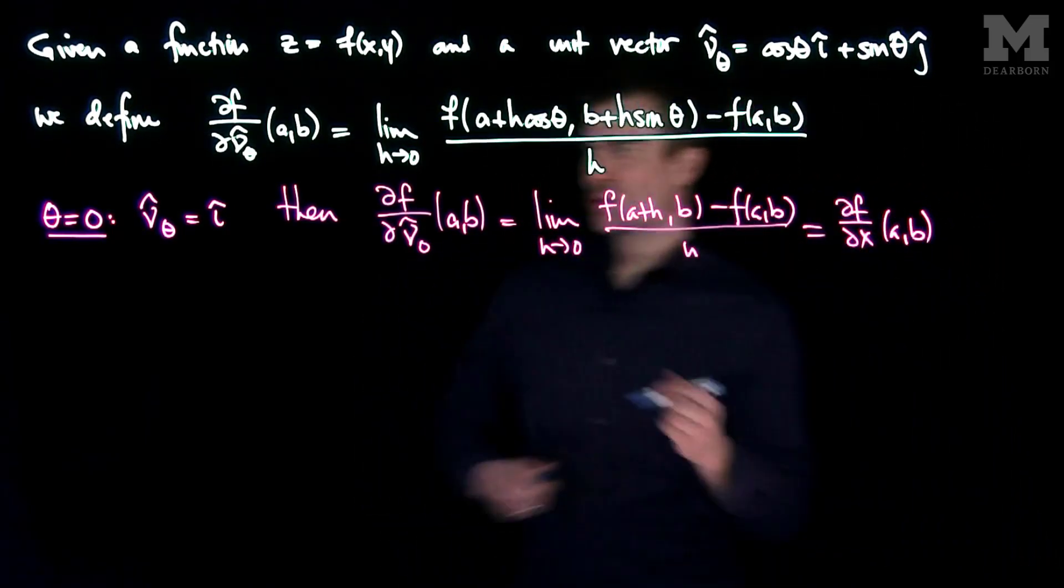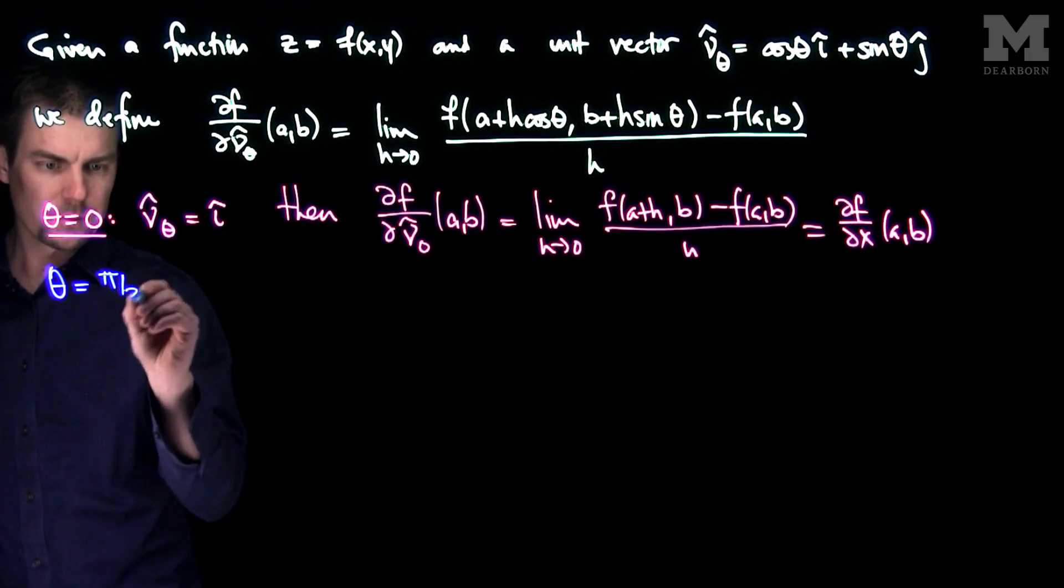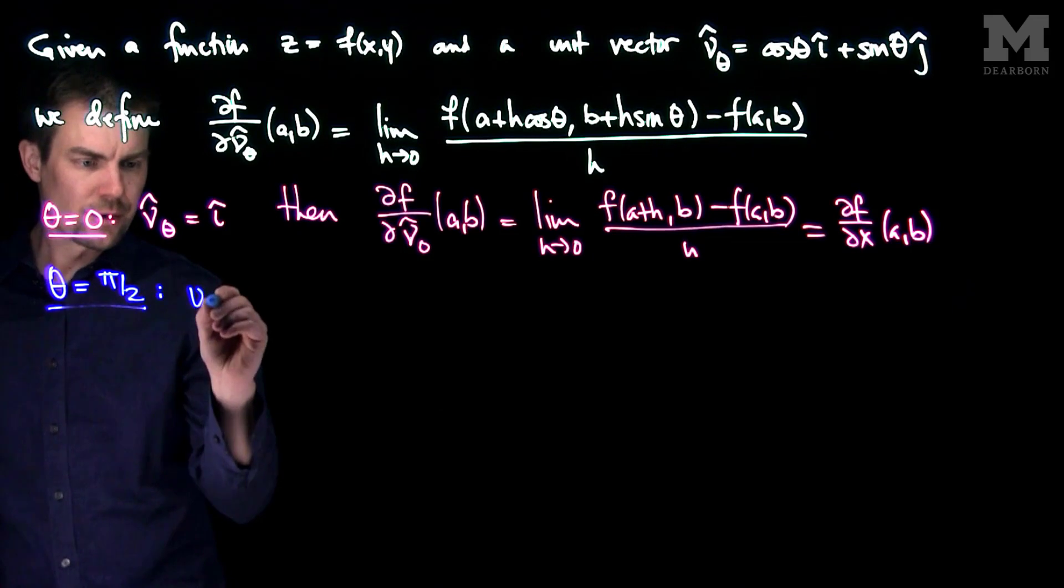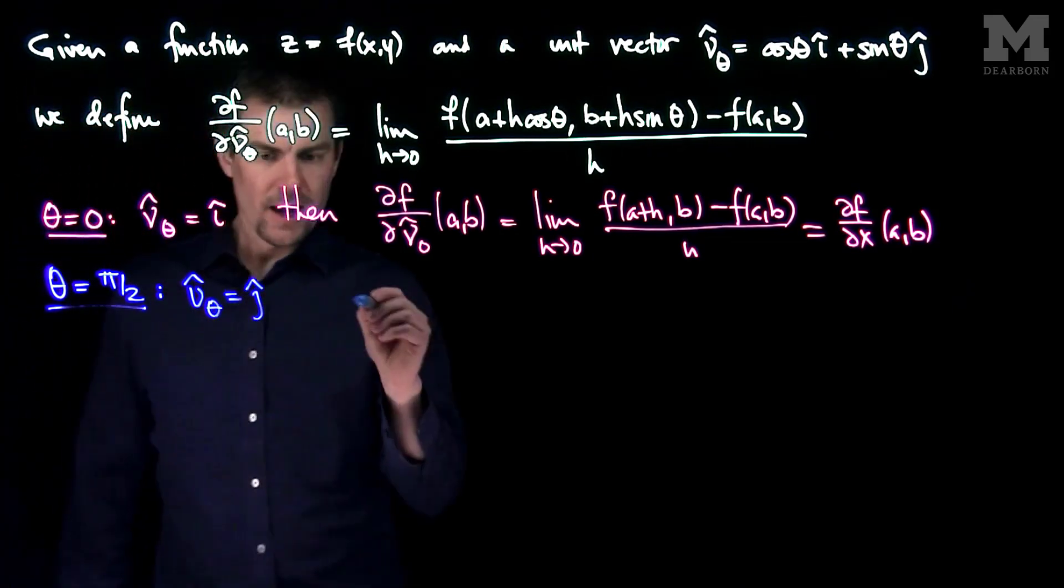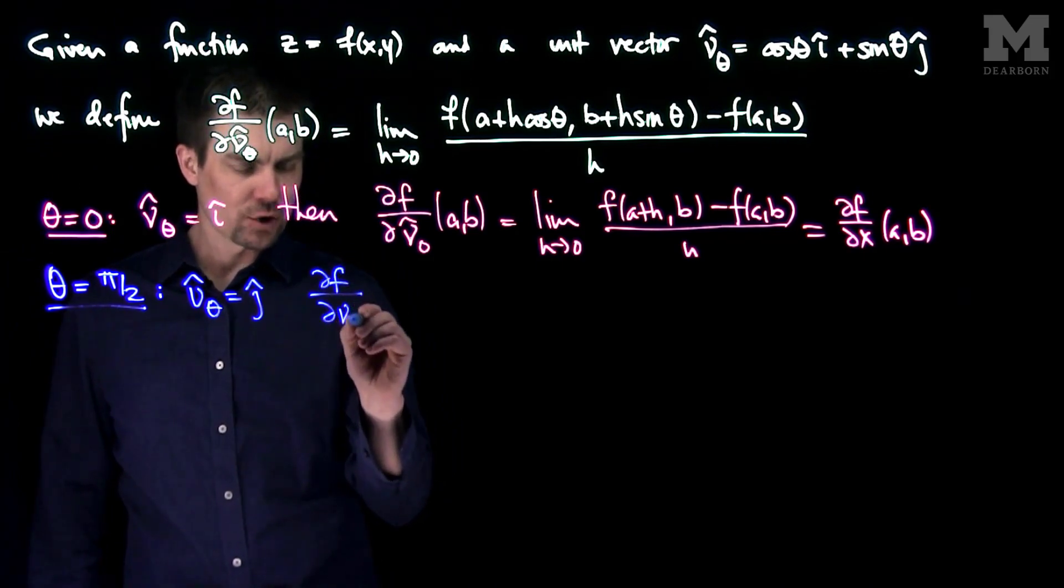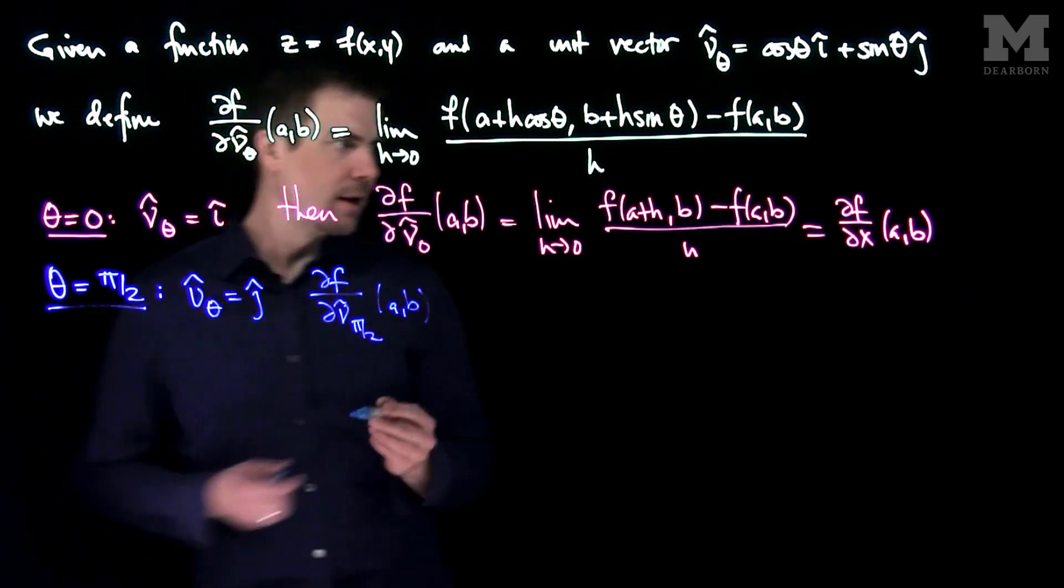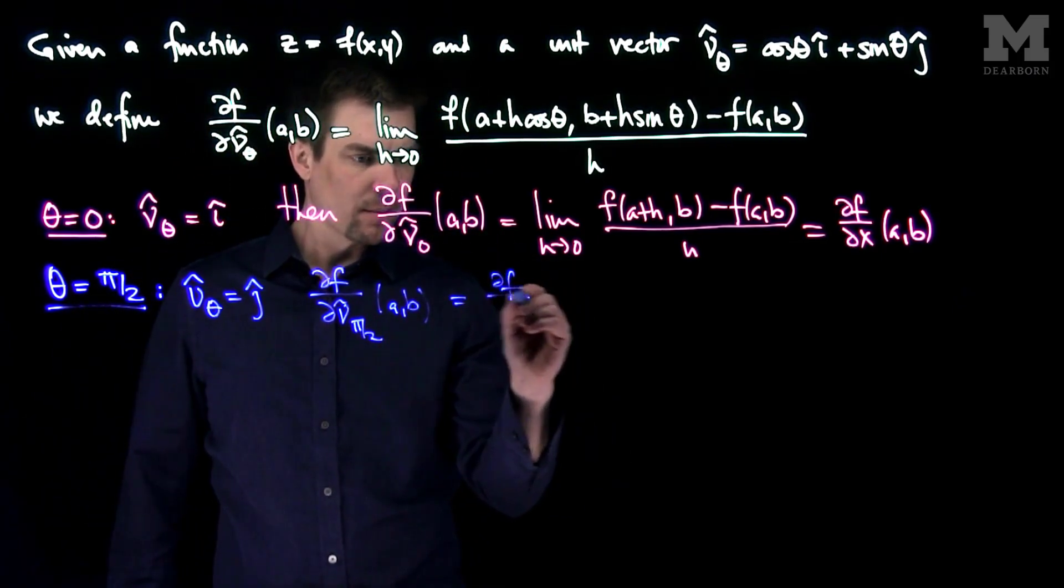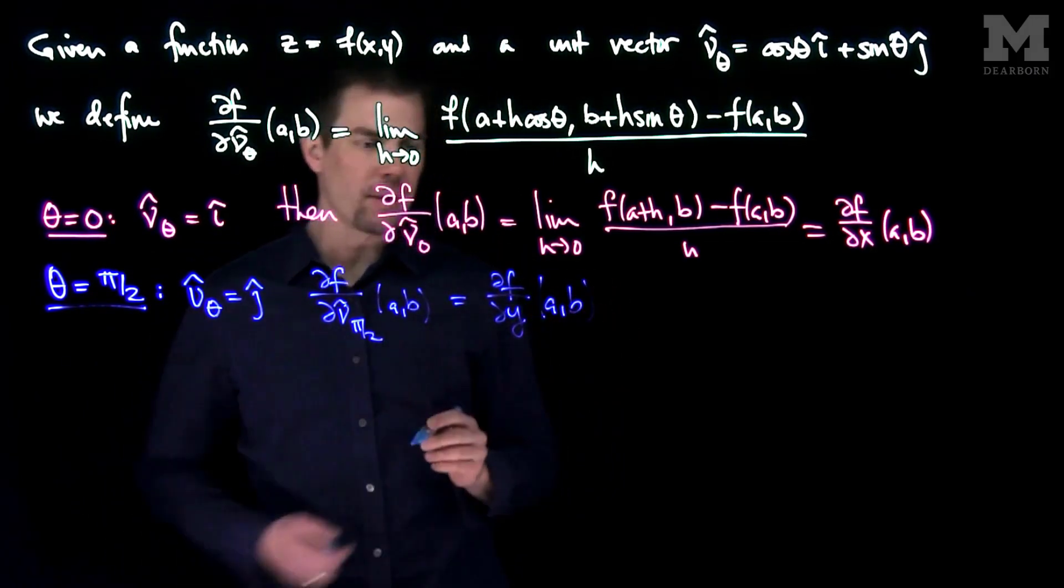We can also see what happens when theta is equal to pi over 2. So when theta is equal to pi over 2, then your nu hat of theta will be equal to j hat. And then partial f by a similar calculation, partial f partial nu pi over 2 at a point ab will be equal to partial f partial y at the point ab.